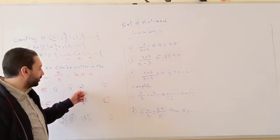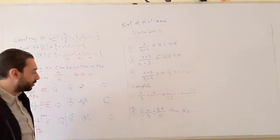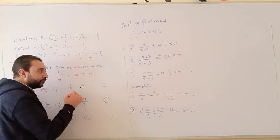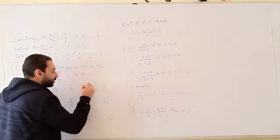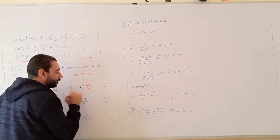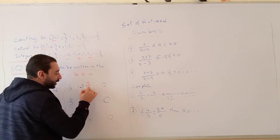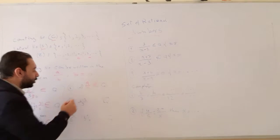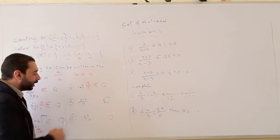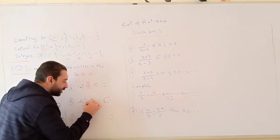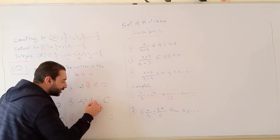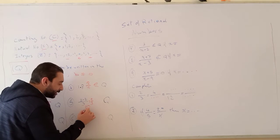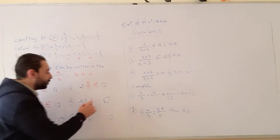1.8 — does it belong to Q? Can we write this decimal number in the form A over B? Yes. It is 18 over 10, which is A over B, and B is not equal to 0, so this belongs to Q. Next, 2 minus 2 over 3 equals 0 over 3, which equals 0, written as 0 over 1. So this belongs to Q.